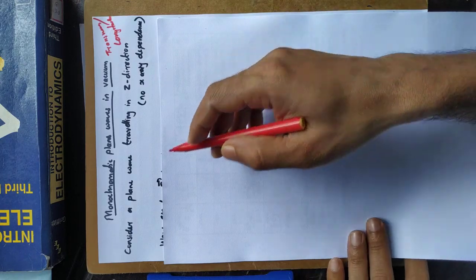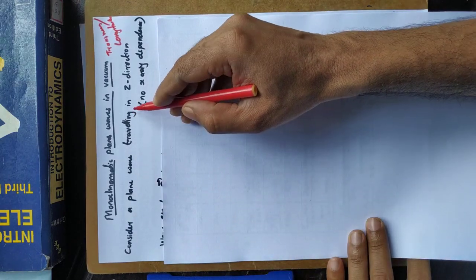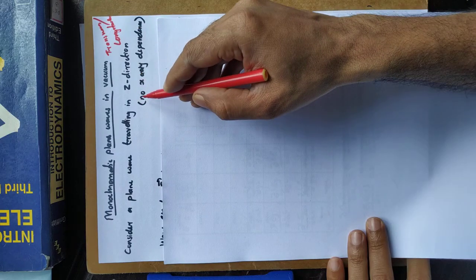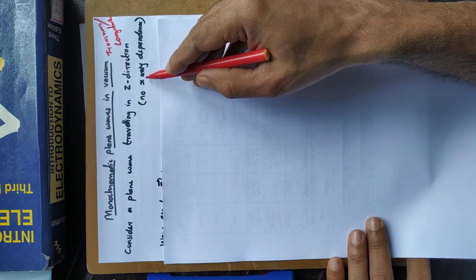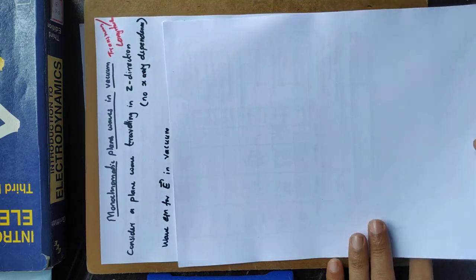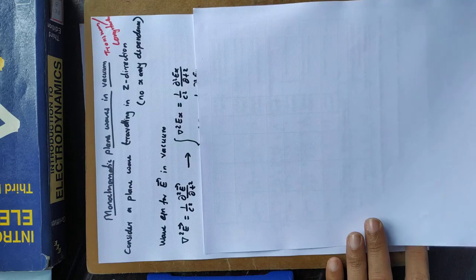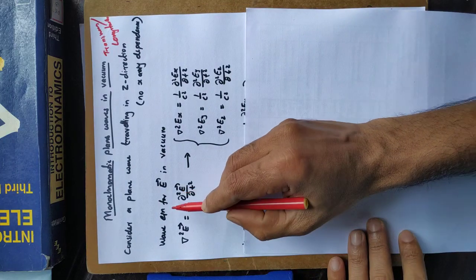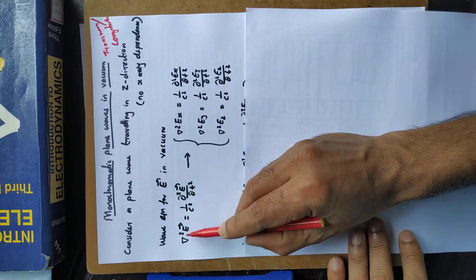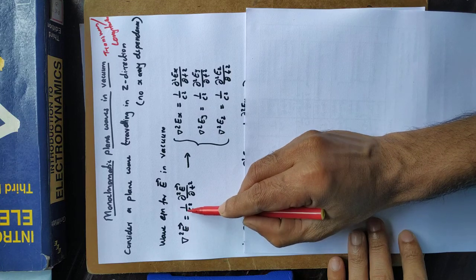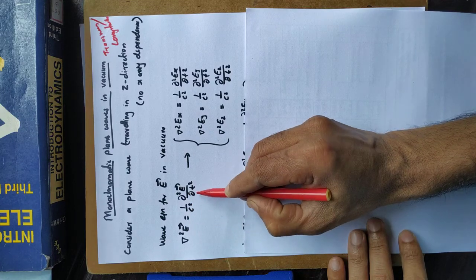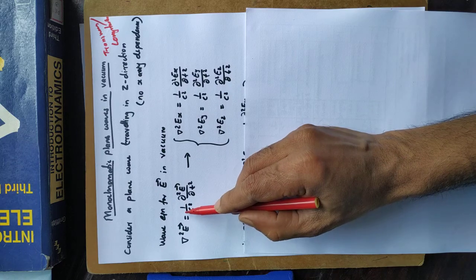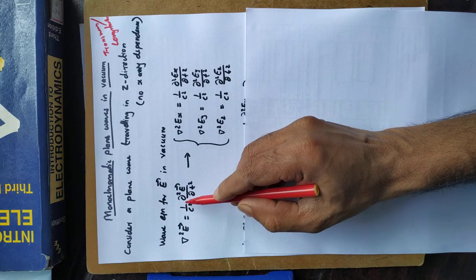We are assuming a plane wave traveling in the positive z direction, so the field has no x and y dependence. Maxwell's equations in vacuum for the electric field give: del-squared E equals (1/c²)(∂²E/∂t²), where 1/c² means μ₀ε₀.